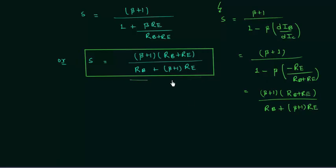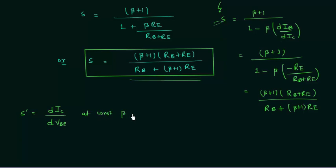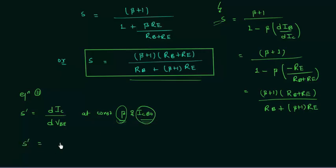You can use the general form to obtain the stability factor for any biasing scheme. Next, S prime equals the small change in collector current with respect to input voltage VBE at constant β and ICBO. Differentiating equation two keeping β and ICBO constant gives: S prime equals minus β divided by (RB + (β+1)·RE).